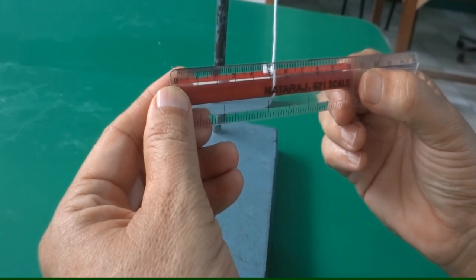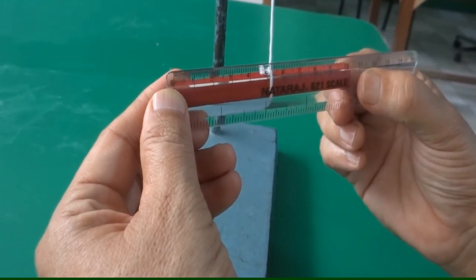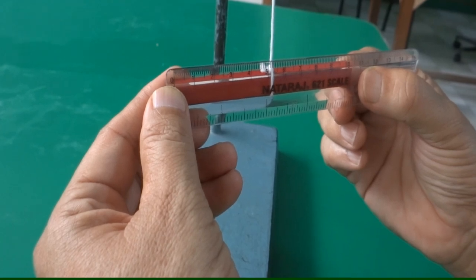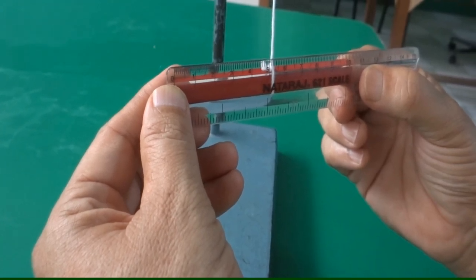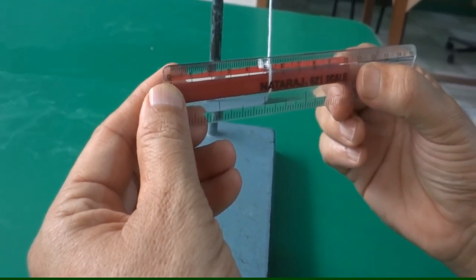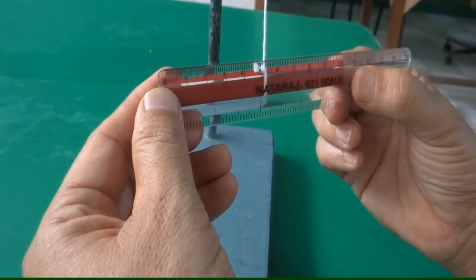So when I suspend the bar magnet right from the center of mass, it should remain parallel to the horizontal if it directs towards north and south of the earth. But you see what happens now.